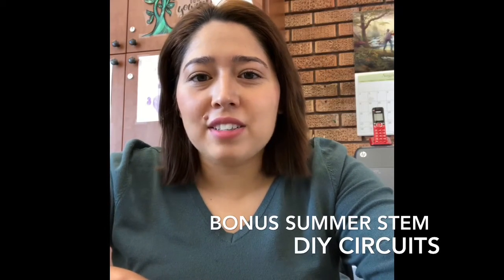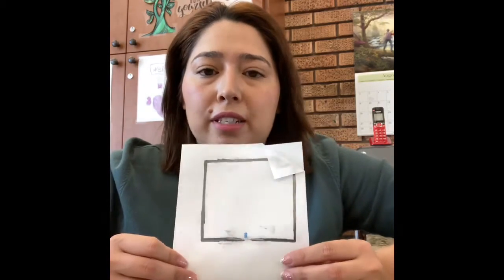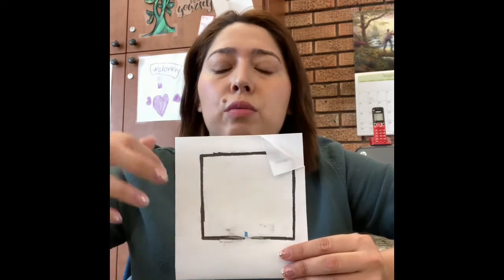What's up guys and welcome back to our bonus summer STEM. I'm going to show you what you're going to need and what we're going to be providing for you. The first thing that you're going to need is a piece of paper. Yours is going to look a bit different because we have really cool designs for you guys to pick and choose from in different colors.